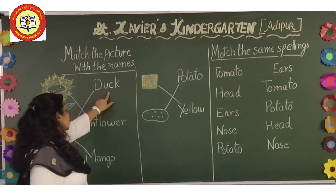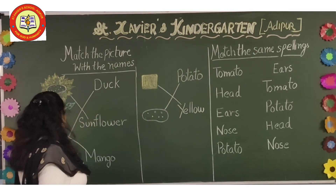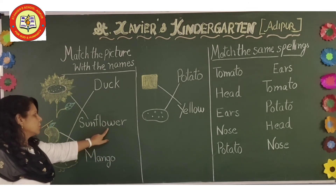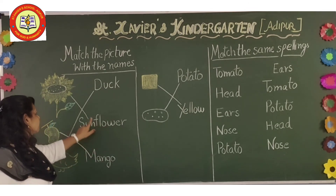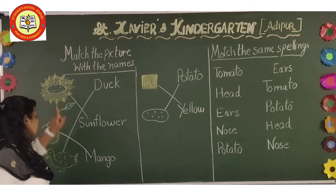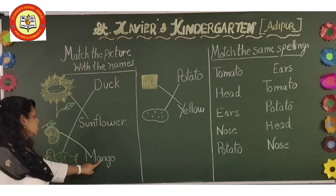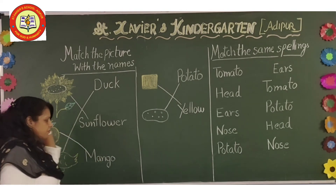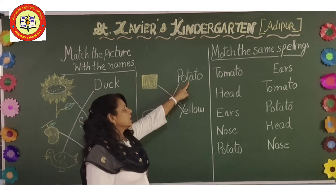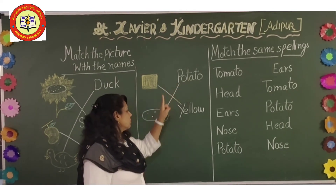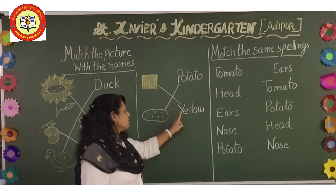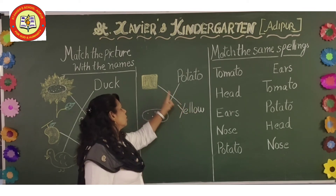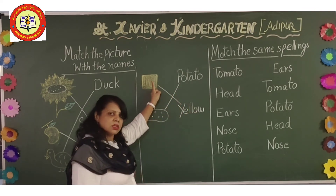D-U-C-K duck, match here. S-U-N-F-L-O-W-E-R sunflower, match here. M-A-N-G-O mango, match here. P-O-T-A-T-O potato, match here. Y-E-L-L-O-W yellow, match here.